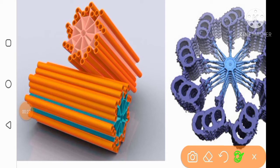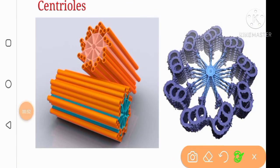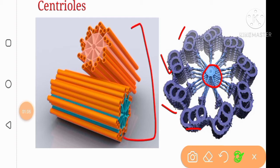composed of nine microtubule triplets — the first, second, third, and so on — all attached to the central core. In the cross section you can see microtubule triplets attached to the central core. A total of 27 tubules constitute one centriole. Within the cell, centrioles occur in pairs and are arranged at right angles to one another.